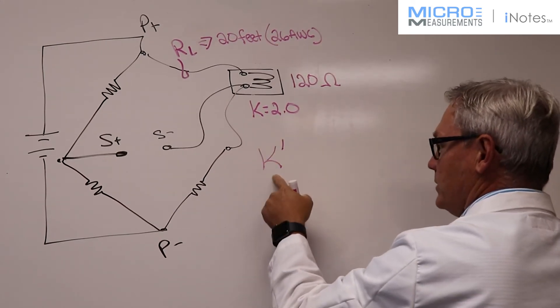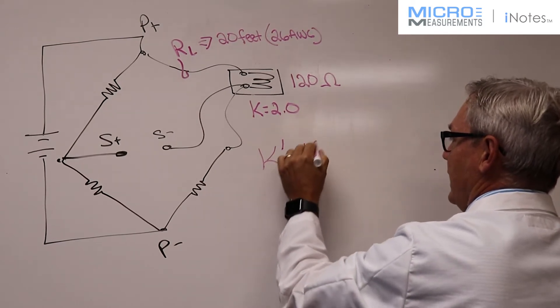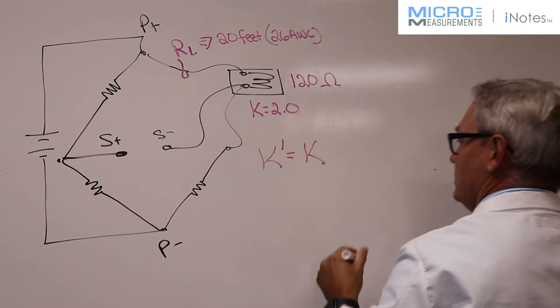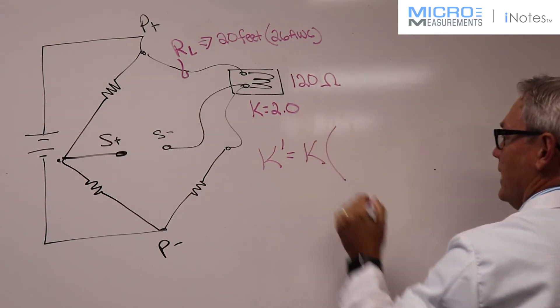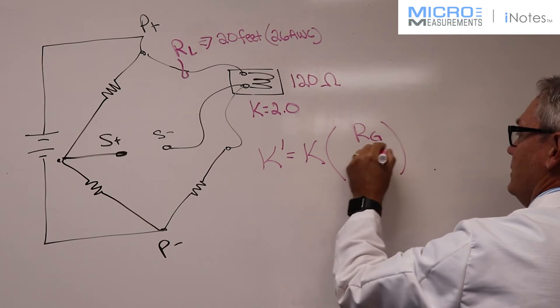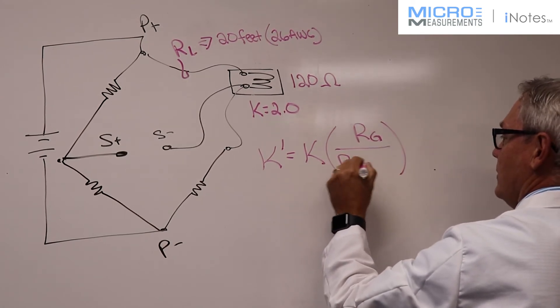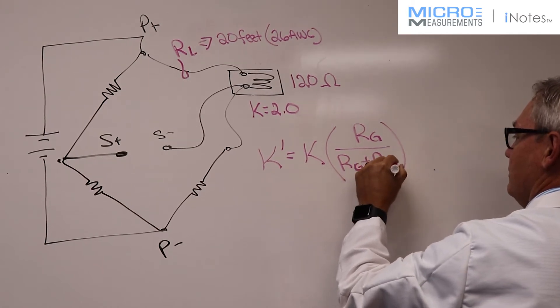It's K prime, which is the gauge factor we're going to calculate, equal to the package gauge factor that we've assumed is two multiplied times the ratio of the resistance of the gauge. We're going to call that RG divided by the resistance of the gauge plus the resistance of the lead wire.